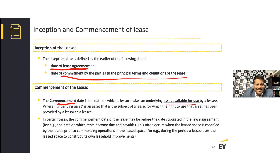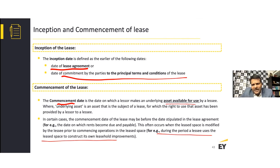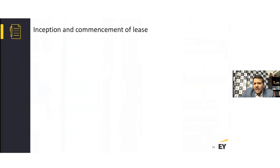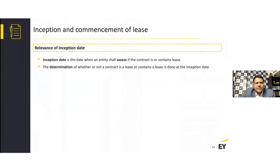Whether the asset can be used for the purpose it is designed to be used helps determine the accounting. The relevance of the inception date is that it is when an entity assesses whether the contract is or contains a lease — this determination is made at the inception date, essentially the date of the contract. The relevance of the commencement date is that it is the date from which you start accruing the accounting charge.